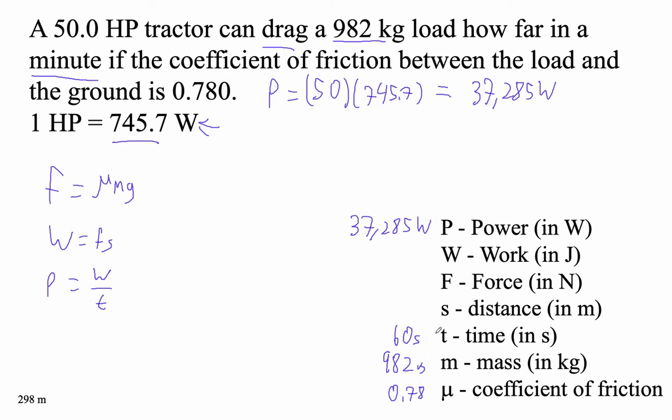Okay, power and time gives us work, because I'm just taking this and solving for work. So power times time is work. So 37,285 watts times 60 seconds is work. You just take this thing, multiply both sides by T and you get PT is work. So that times 60 is the work.